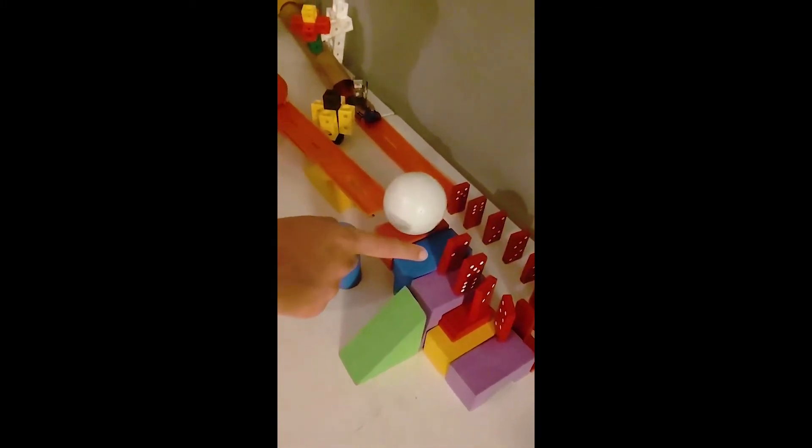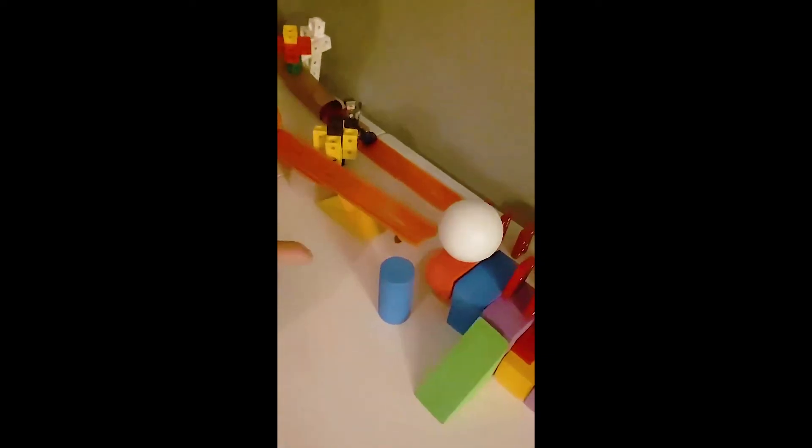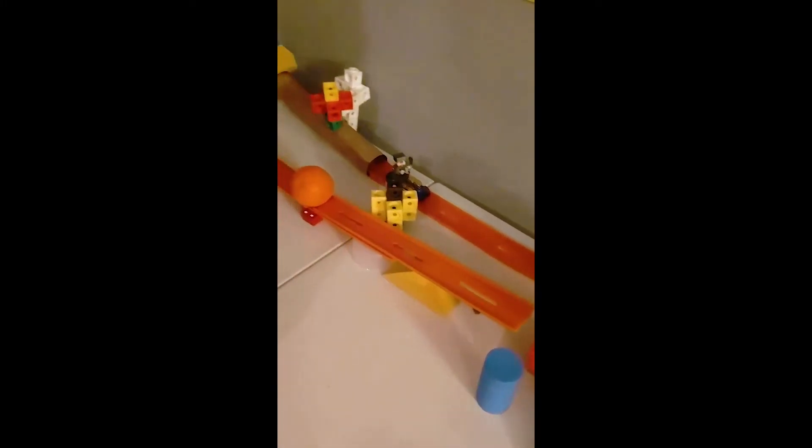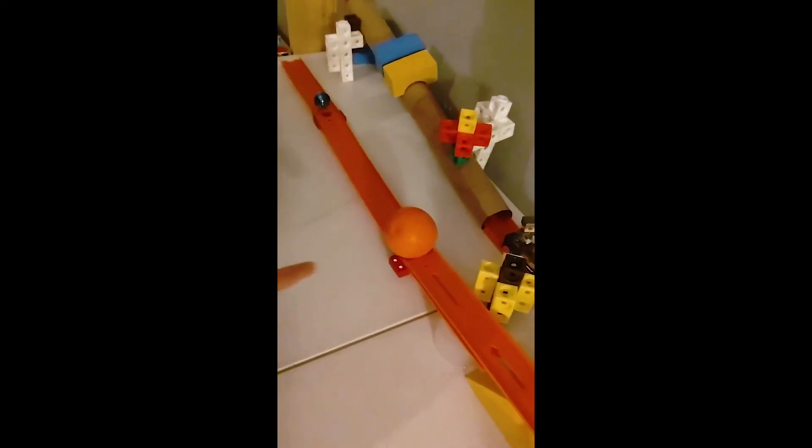And then this last domino hits this ball which pushes on this end of the lever and it acts like a seesaw, and when this end is pushed down it moves this orange ball which rolls down and hits this final heavy marble.